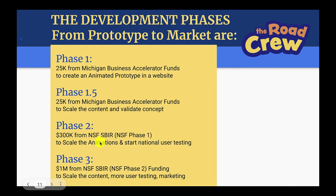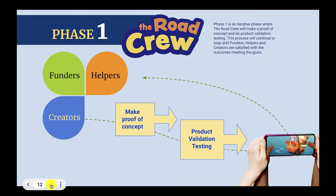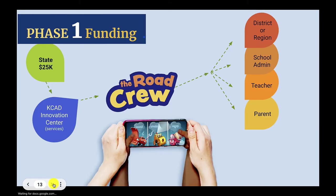You have to get through NSF phase one in order to get to phase two. I would highly recommend anyone doing any sort of innovative research — where you have a new kind of audience or you're solving a problem the United States needs to focus on — to apply for these. The funding process is visualized: funders, helpers, and creators make the proof of concept; then product validation testing leads to a product; then we go back to the helpers and funders. Visuals show the process, funds distribution, and milestones.